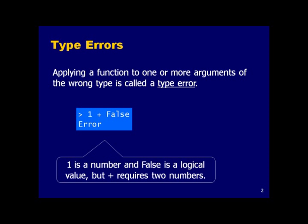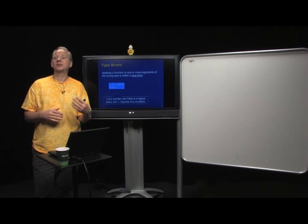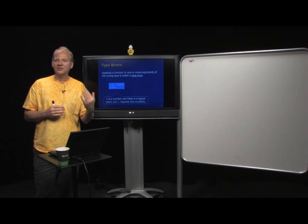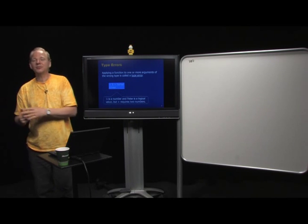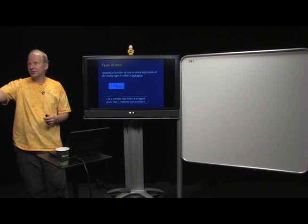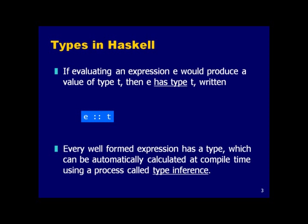We want types so that the compiler can point out errors in your program. For example, if you write `1 + False`, since 1 is a number and False is a boolean, you cannot add them, and the compiler will tell you there's a type error. Static typing is great — it helps remove trivial errors like this.